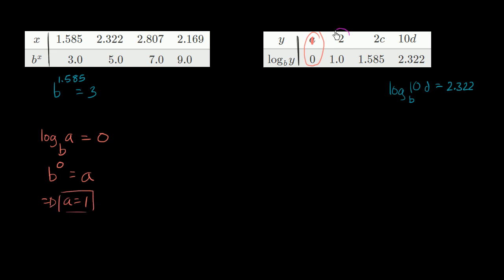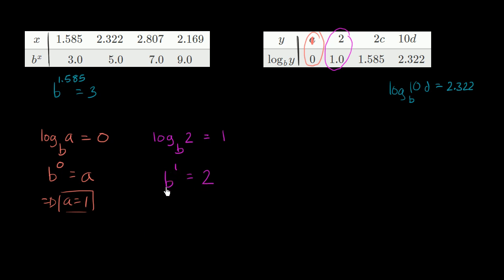Now let's look at this next piece of information right over here. That tells us that log base b of 2 is equal to 1. This is equivalent to saying that b to the first power is equal to 2. So I'm raising something to the first power and getting 2 — what is this thing? Well, that means b must be equal to 2. So b is equal to 2.